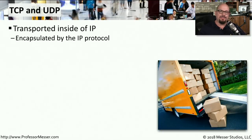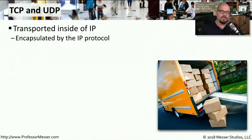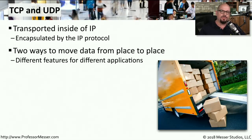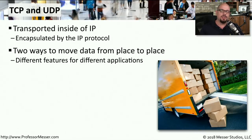With this nesting of information, we have ethernet, which contains IP, and inside IP is either TCP or UDP. We call this encapsulation of protocols — putting one protocol within another. This gives us a couple of ways to move data: we can put information into a TCP box or a UDP box, with different features for each depending on the type of application.